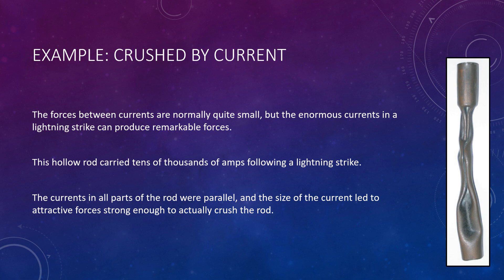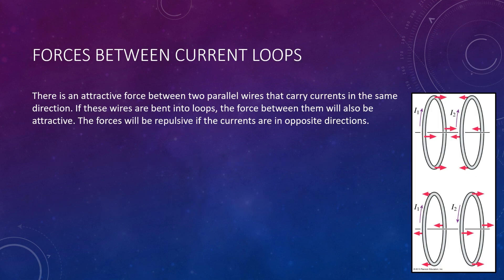Now we're going to take this one step further. If you take those wires and bend them into loops, the same exact thing happens. A current loop is simply a straight wire bent into a loop. So if you have current going in the same direction, you will still have an attractive force between the two wires, and if they're in opposite directions, you will still have a repulsive force.